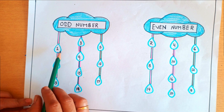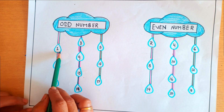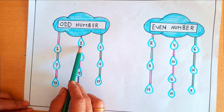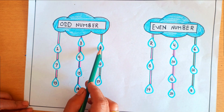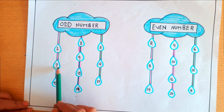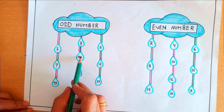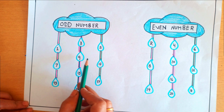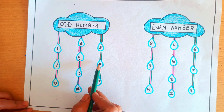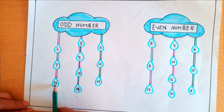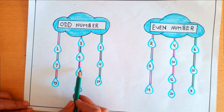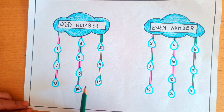For example, 1, 3, 5, 7, 9, 11, 13, 15, 17, 19.